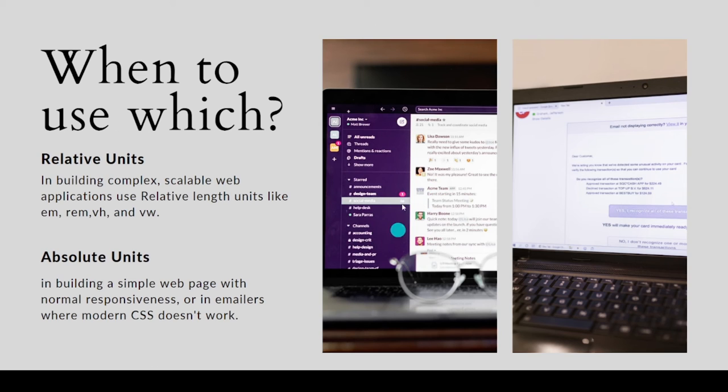But on the other hand, here's an example of an email. Many emailers like Outlook and Gmail don't support modern CSS properties like box shadows and others.